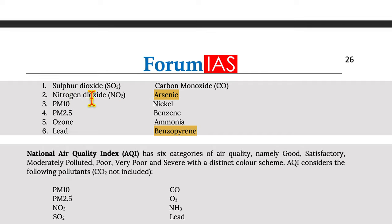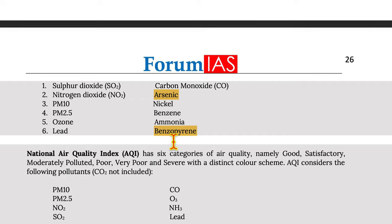National ambient air quality standards include the following pollutants: sulfur dioxide, nitrogen dioxide, PM10, PM2.5, ozone, lead, carbon monoxide, arsenic, nickel, benzene, ammonia, and benzopyrene.